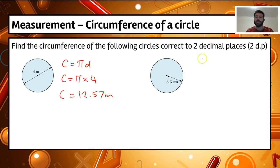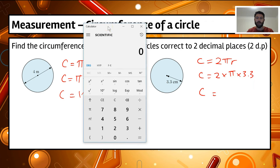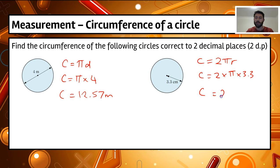In the second example we're given the radius, so we use the formula circumference equals 2πr. Substituting in: circumference equals 2 times pi times 3.3. Using a calculator, 2 times pi times 3.3 equals 20.734, which rounds to 20.73 centimetres. Note that we don't write the full value of pi in the substitution step — we use the calculator's pi button. The only time we'd use 3.14 is if specifically told to.